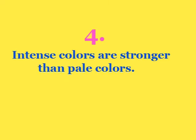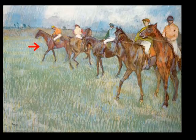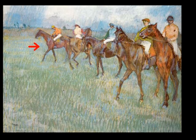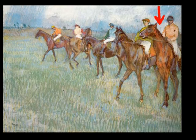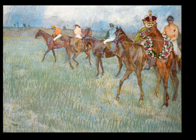And finally, intense colors are stronger than pale colors. Forms with muted colors tend to recede while forms with intense saturated colors come forward. For all of these reasons combined, the horse on the right is the clear winner of the viewer's attention.